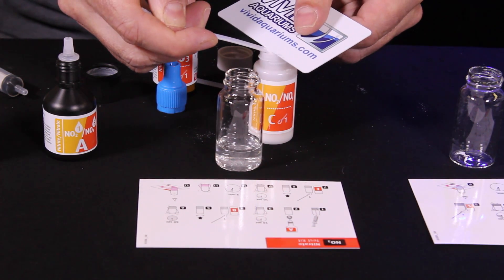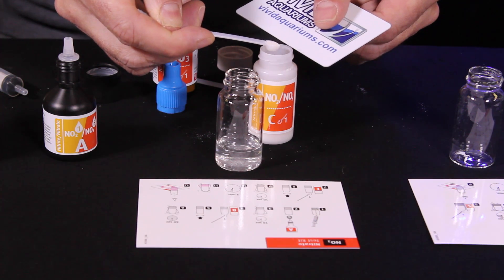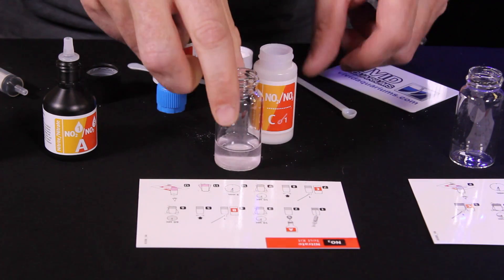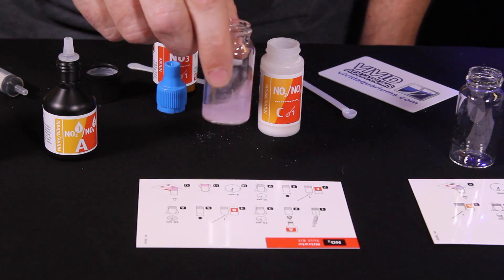Next step is to add one level scoop of reagent C. Again, use the card to level that off. Put that in and then we need to swirl for 10 seconds.